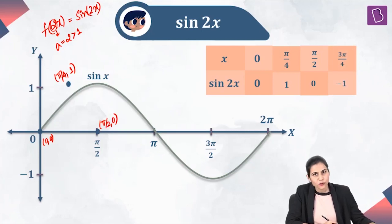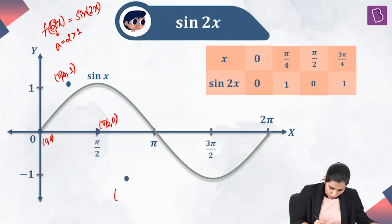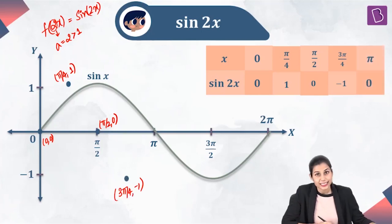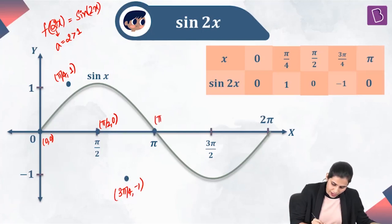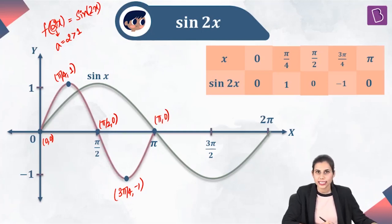Next, I take x = 3π/4. So sin(2x) becomes sin(3π/2), which is −1. And hence, this point becomes (3π/4, −1). Lastly, when I take x = π, sin(2x) becomes sin(2π), which is 0. And hence I get (π, 0). When I join these points, I get the graph of sin(2x) in the interval 0 to π.